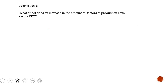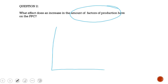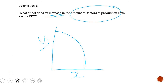Question 2 asks what effect an increase in the amount of factors of production has on the PPC curve. An increase in all factors of production means we have more resources in our economy. We draw the general PPC with good X and good Y on the axes. When we have more resources, there is an outward shift of the PPC curve. If the increase were only in the resources for good X, then the PPC would only shift outward on the X side, because you can now produce more of X.